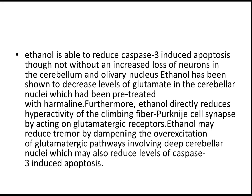How does alcohol help? Ethanol is able to reduce caspase-3 induced apoptosis, though not without an increased loss of neurons in the cerebellum and olivary nucleus. Ethanol has been shown to decrease levels of glutamate in the cerebellar nuclei. Furthermore, ethanol directly reduces hyperactivity of climbing fiber-Purkinje cell synapses by acting on glutamatergic receptors. Ethanol may reduce tremor by dampening over-excitation of glutamatergic pathways involving deep cerebellar nuclei, which may also reduce levels of caspase-3 induced apoptosis.